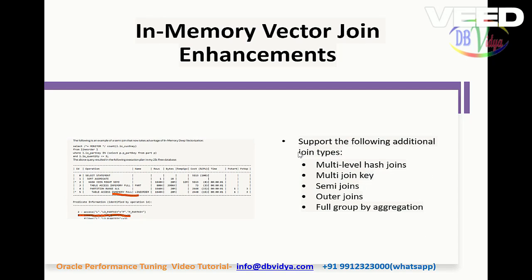The next feature is in-memory vector join enhancement. It has extended support to many different types of joins like multi-level hash joins, semi-joins, and anti-joins — these are in-memory vector joins, not normal ones. To know whether Oracle is using this feature, you can check the explain plan. Once you see 'in-memory' there, you can be sure that Oracle is using this in-memory vector join new feature.